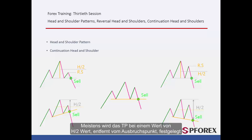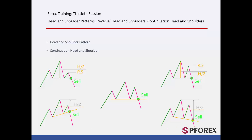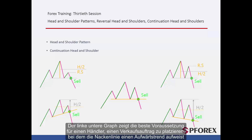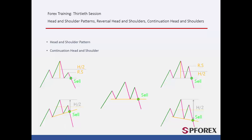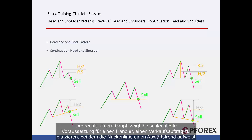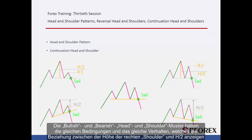Most of the time, TP is set on the H2 value away from the breakout point. The left bottom graph indicates the best condition for a trader to place a sell order, in which neckline has an upward trend. The right bottom graph illustrates the worst condition for a trader to place a sell order, in which neckline has a downward trend. Bullish and bearish head and shoulder patterns have the same conditions and manner, considering the relationship between right shoulder height and H2.